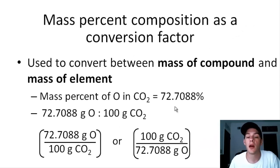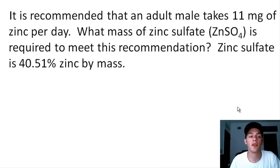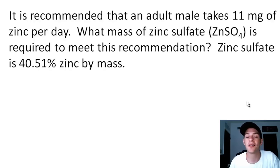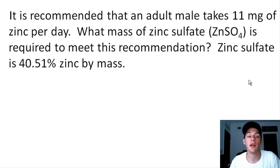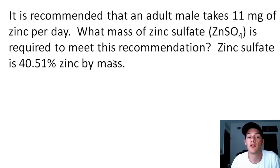Let's do an example using mass percent composition as a conversion factor. It is recommended that an adult male takes 11 milligrams of zinc per day. What mass of zinc sulfate (ZnSO4) is required to meet this recommendation? Zinc sulfate is 40.51% zinc by mass. In this example, mass percent composition has already been calculated for us, so we can skip that step.